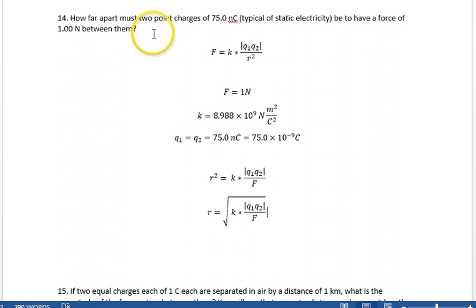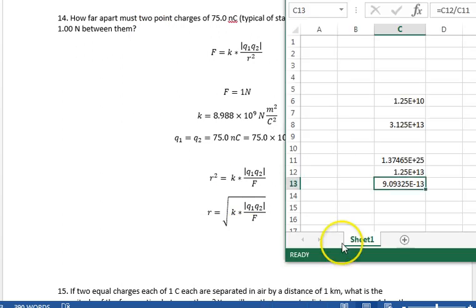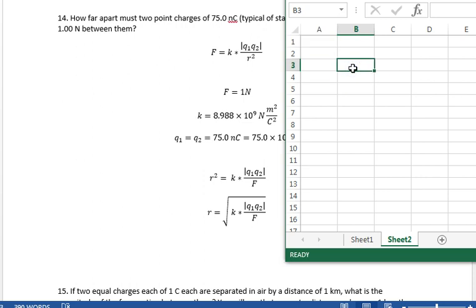We just need to stick in all of our values and calculate R. So, I'm going to multiply everything underneath the square root sign first: 8.988 times 10 to the 9th times 75 times 10 to the minus 9 times 75 times 10 to the minus 9 divided by 1 newton.